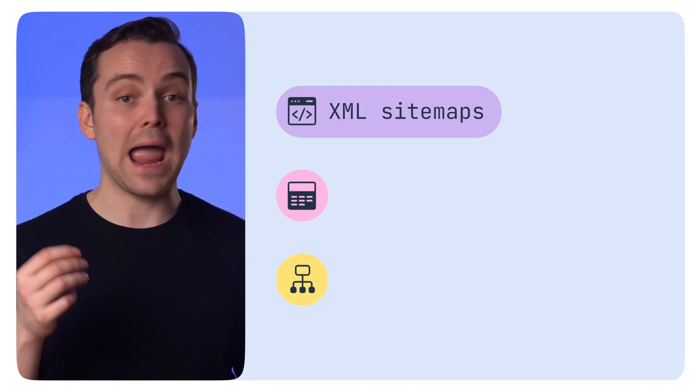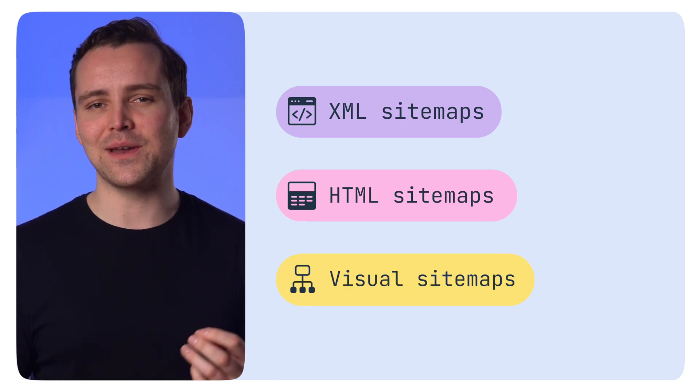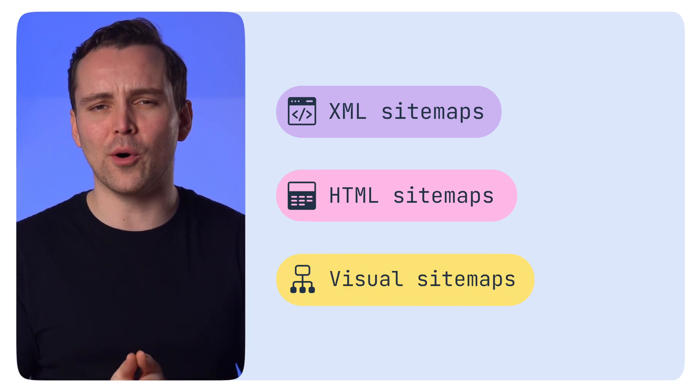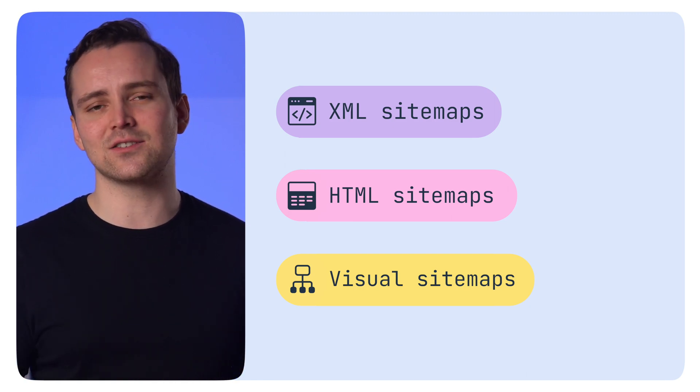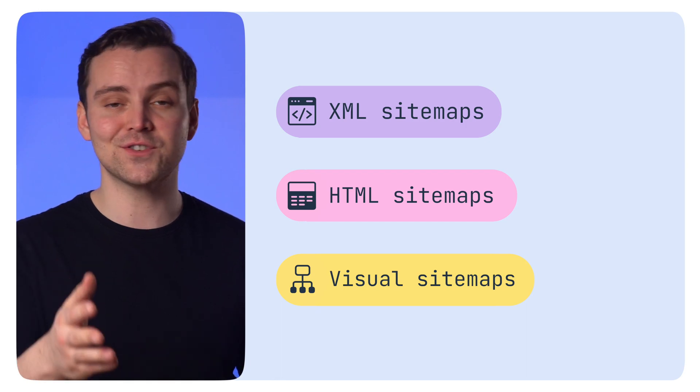Creating a sitemap is a critical step in optimizing your site for search and enhancing user navigation. But how do you make one without getting bogged down in complexity? If creating a sitemap seems daunting, don't worry — today we're simplifying it. I'm here to guide you through the big three: XML, HTML, and Visual Sitemaps. From crafting your very own to ensuring Google bots give your site the attention it deserves, to submitting them to search engines. We've got a lot to cover, so let's dig in.